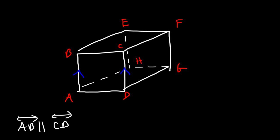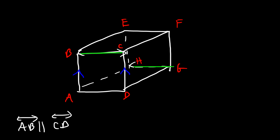What about BC and HG — are they parallel? Yes, those lines are parallel because you can draw a plane that contains both of them. BC and HG are parallel lines that exist in the same plane when drawn that way. Now what about BC and DG? What's the relationship between those two lines?